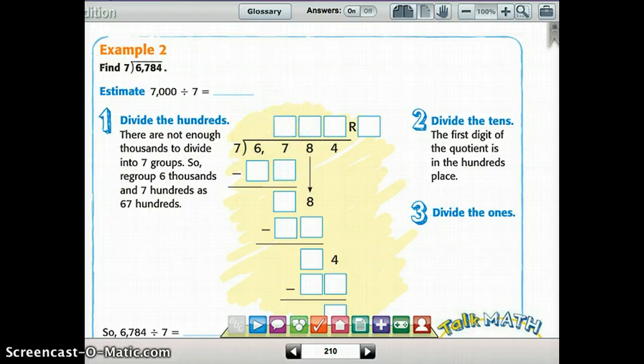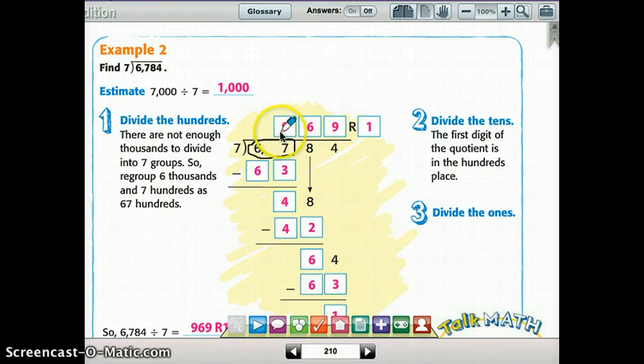Okay, so now we move to the hundreds. So we're looking at 67. 67 divided by 7. So 67 divided by 7 gives us 9. So I'm just going to go through this quick because you should know these steps by now. 9 times 7, 63, subtract, we have 4 left over, bring it down, and do this problem just like you would any other. So it's just that first step of remembering when it can't go into the first number, we look at the next numbers together.